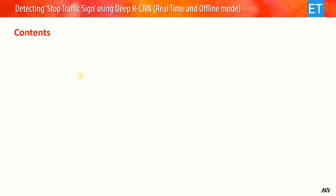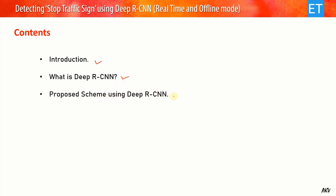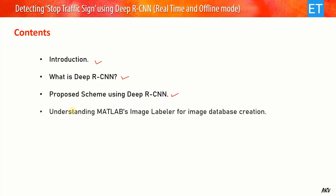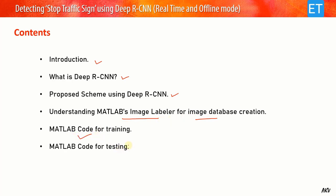Let me show you the contents of this video. First, I will introduce the topic, then explain what Deep RCNN is, then the proposed scheme for detecting traffic stop signs from images and videos, then MATLAB's Image Labeler application for image database creation, then the MATLAB code for training, the code for testing, and finally the code execution and result analysis.